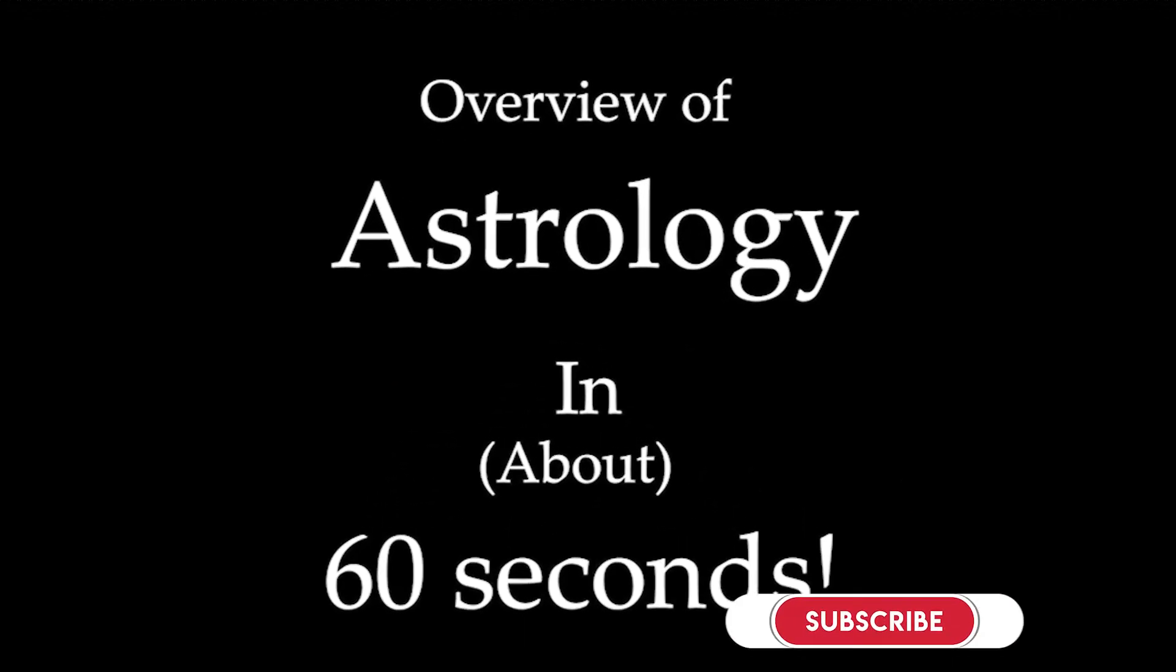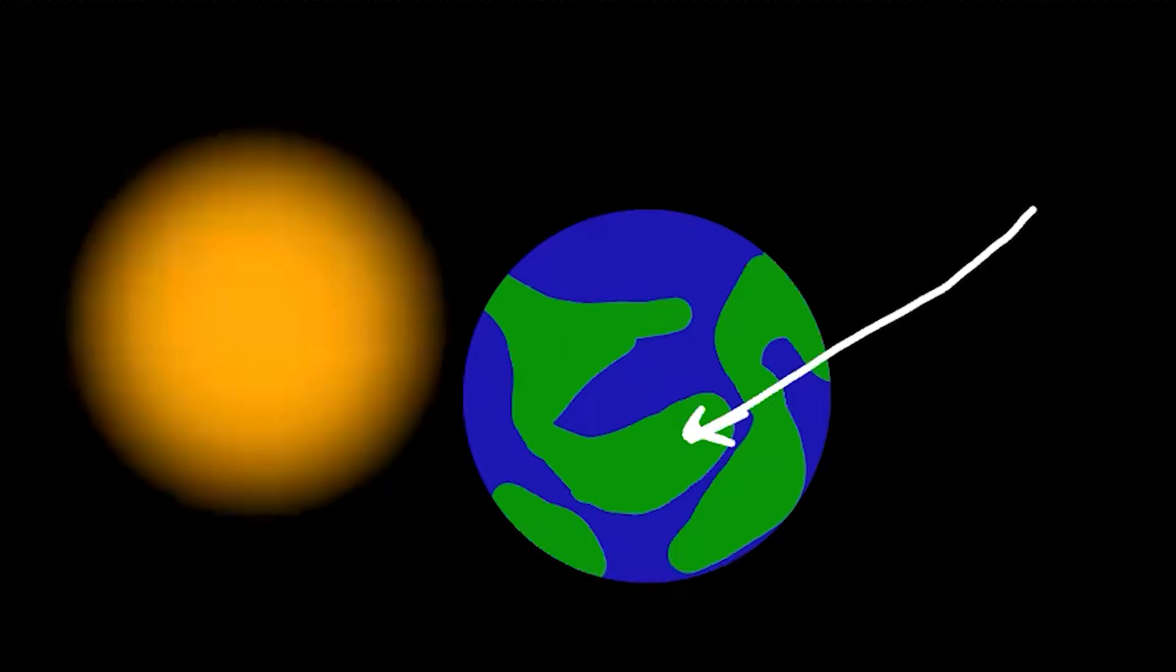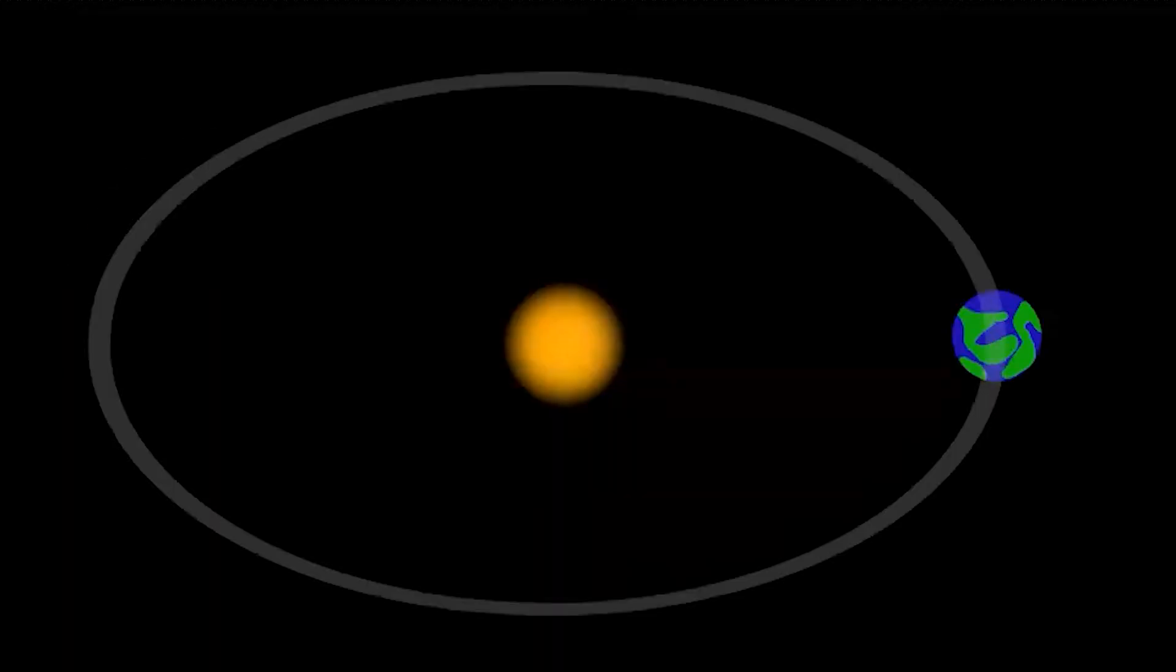This is astrology in 60 seconds. This is the earth. This is where you live. This is the sun. This is what it would look like if you were looking down below on the earth.